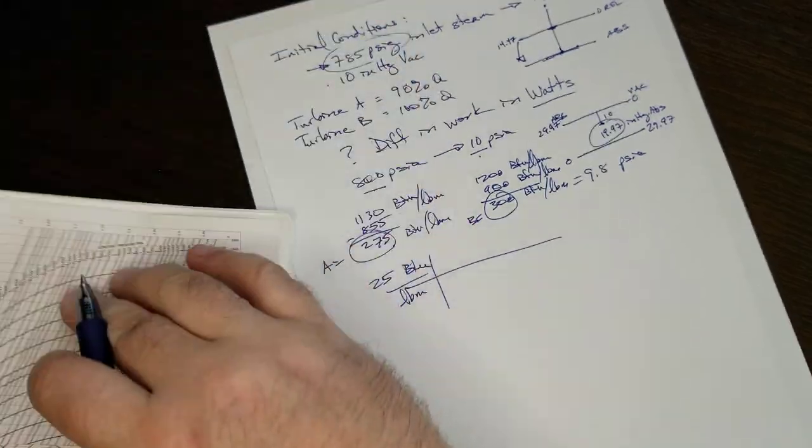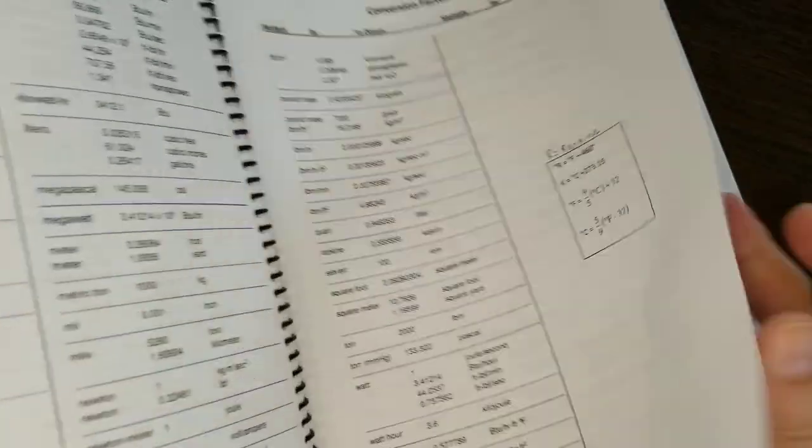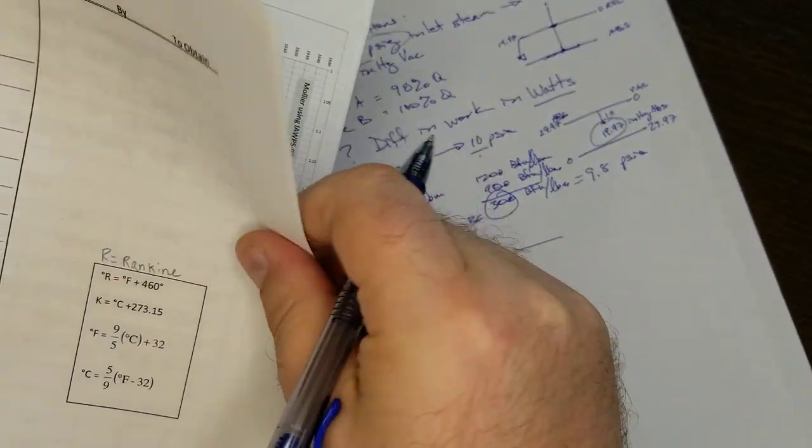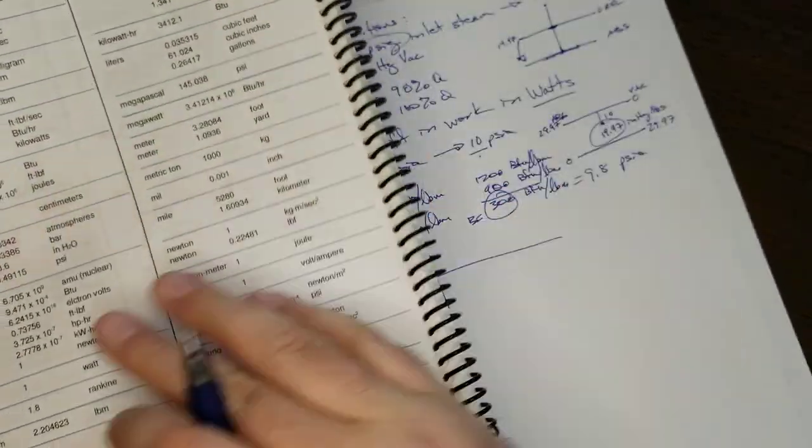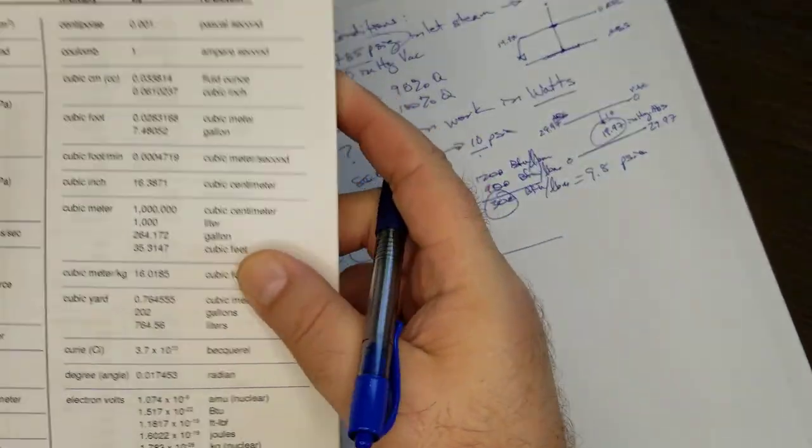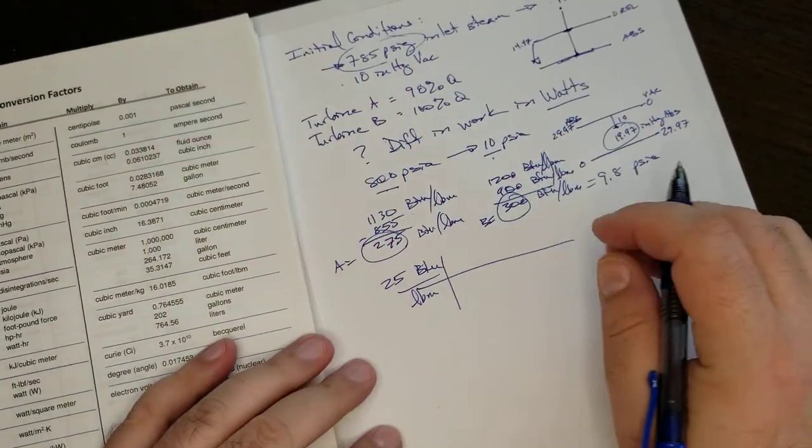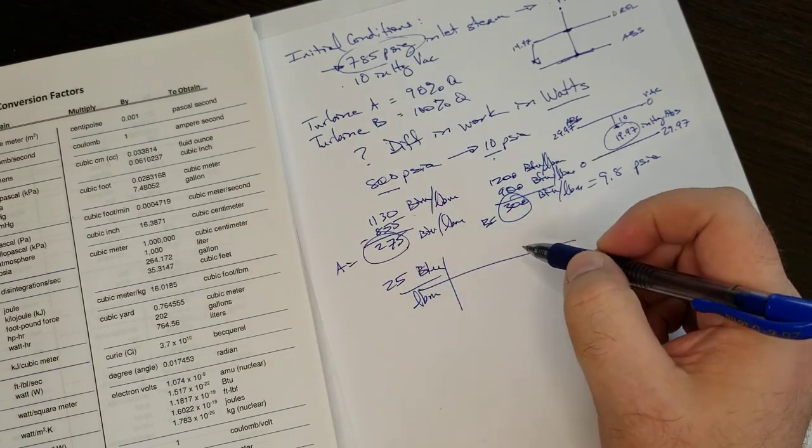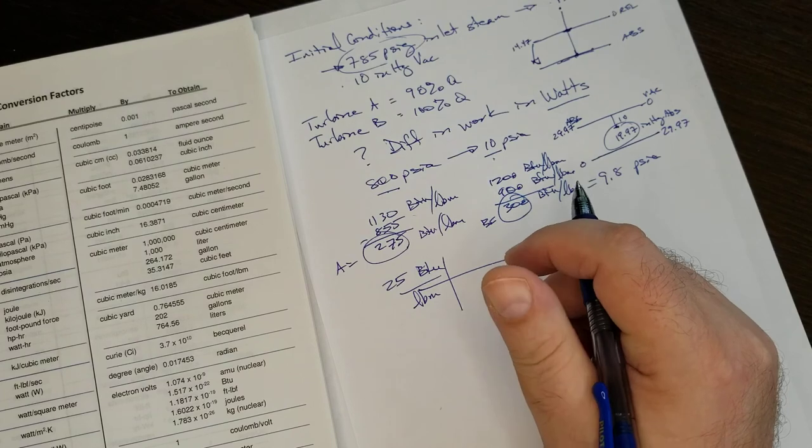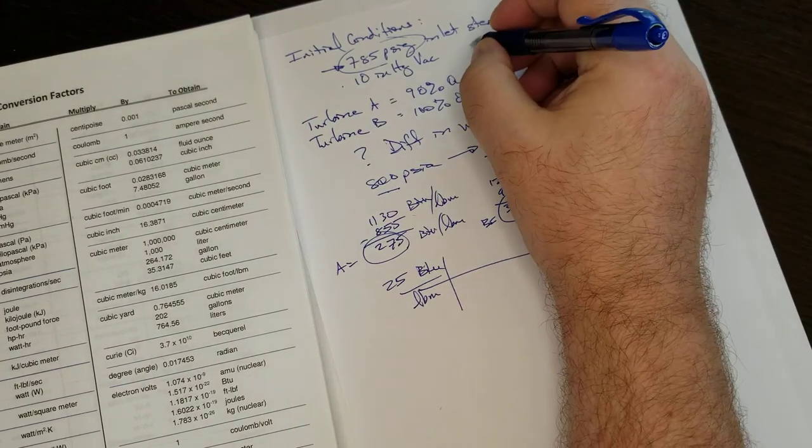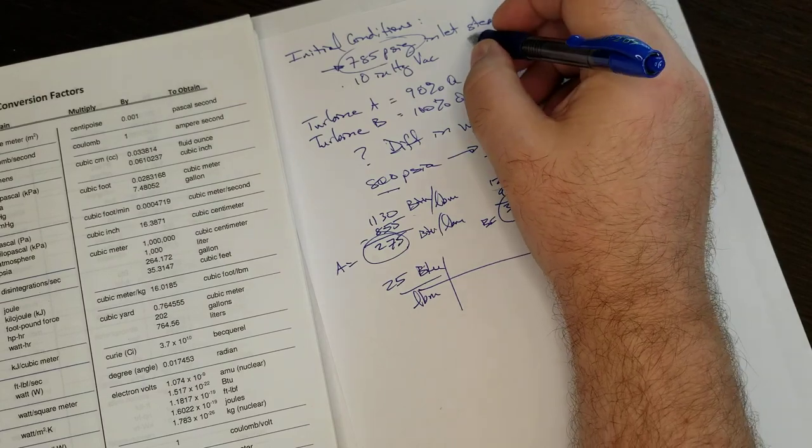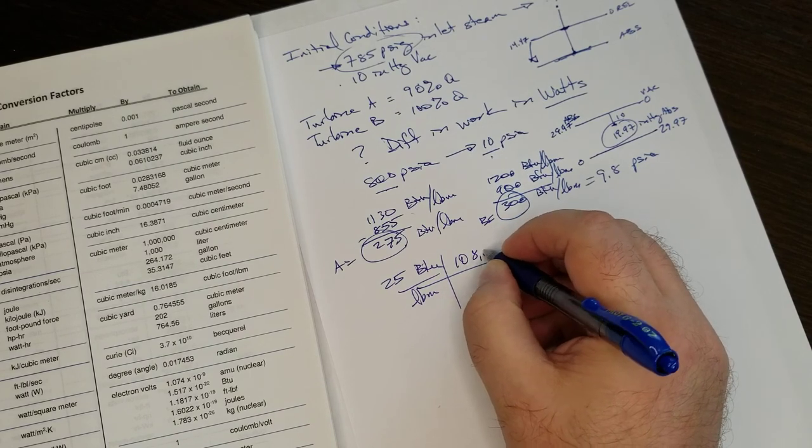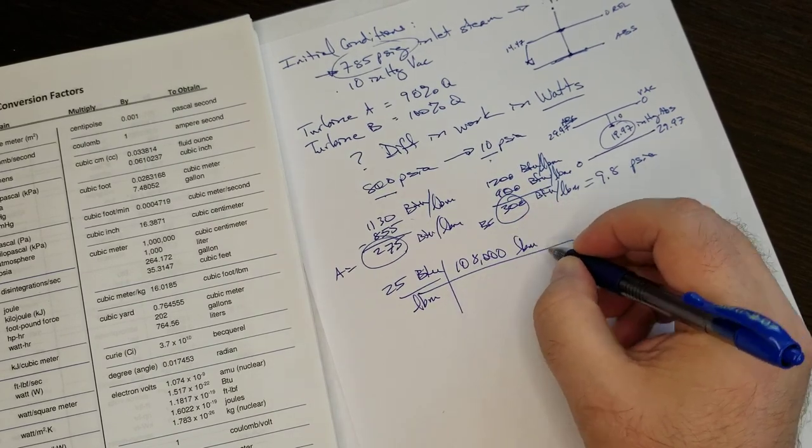Okay, so now we just convert that to watts, and we're not there yet, we need to multiply times the flow rate. So that work difference, 25 BTUs per pound mass, times a flow rate, generally about 108,000. I might give you 105, or 106, 110. Let's say 108,000 pounds mass per hour.